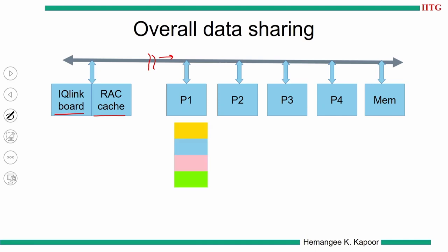This depicts the L2 cache of processor P1, where the different colors indicate blocks coming from various quads. The blue color blocks come from the local memory — that is the local memory block cached by P1. When a processor caches a local memory block, the remote access cache has nothing to do with it and will not keep any information about it. The coherence for locally allocated and locally cached blocks will be done by the quad bus snooping protocol.